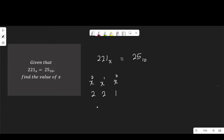Now, multiplying each of the digits by its place value, I will have 2 multiplied by X to the power of 2 plus 2 multiplied by X to the power of 1 plus 1 multiplied by X to the power of 0. And that will be 2X squared plus 2X plus anything raised to the power of 0 is 1. And 1 times 1 is 1. And equal to 25.